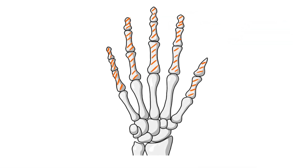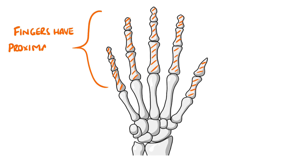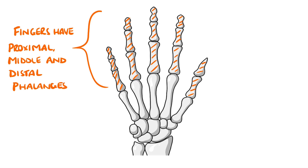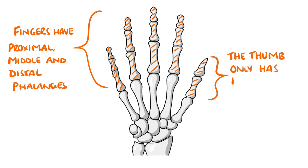You then have the phalanges. There are 3 in each finger, called the proximal, middle, and distal phalange, but only 2 in the thumb — the proximal and distal phalange.